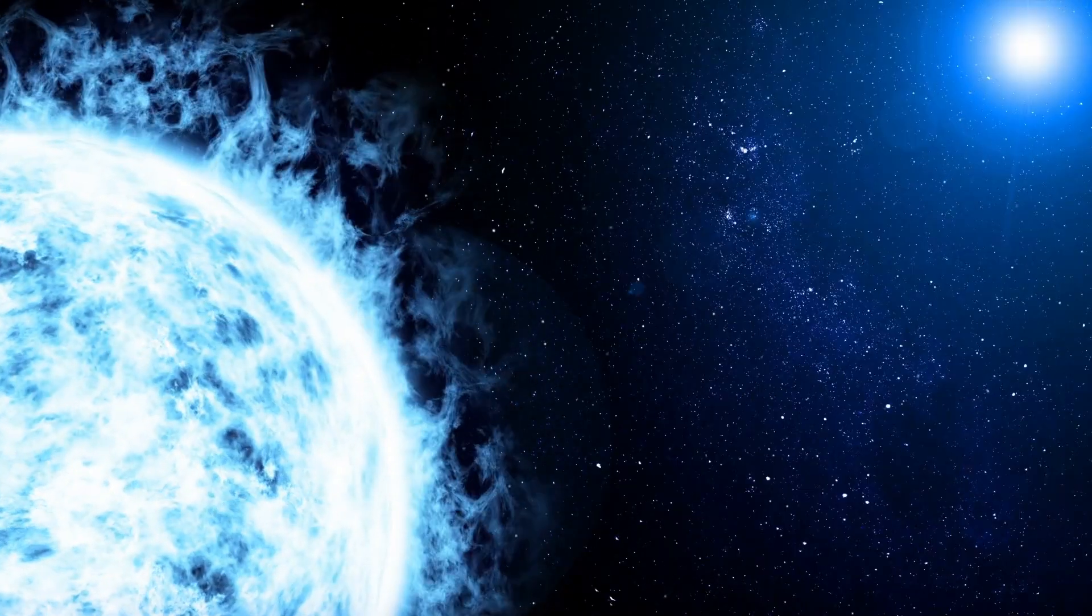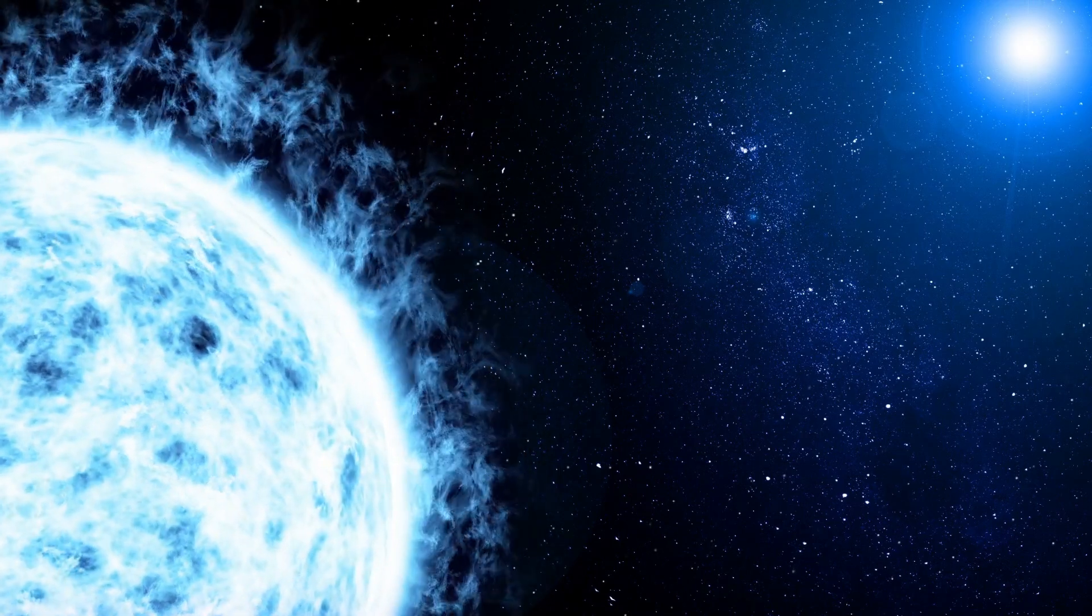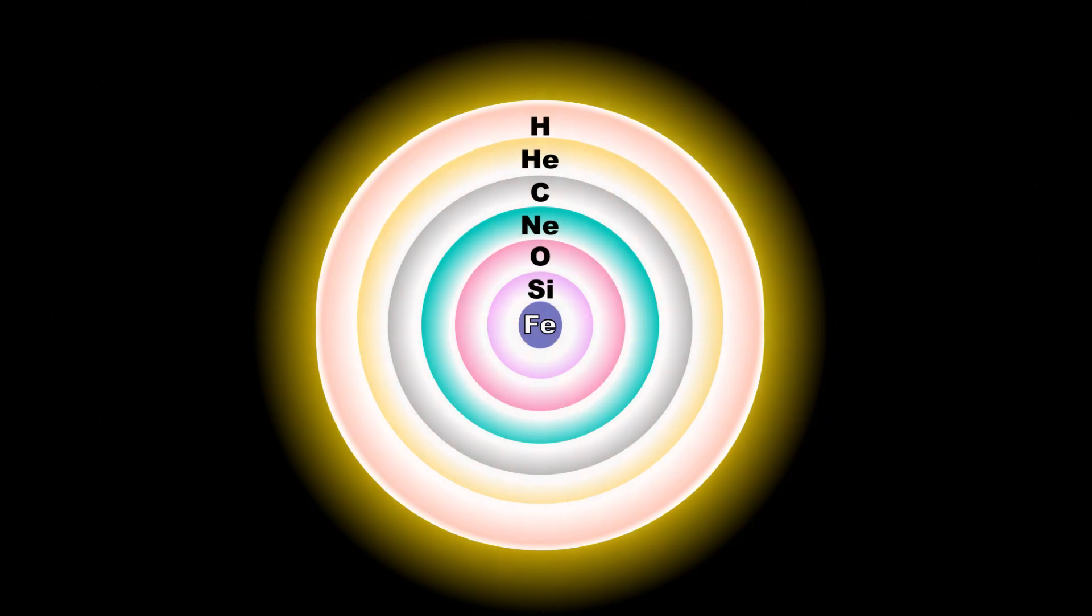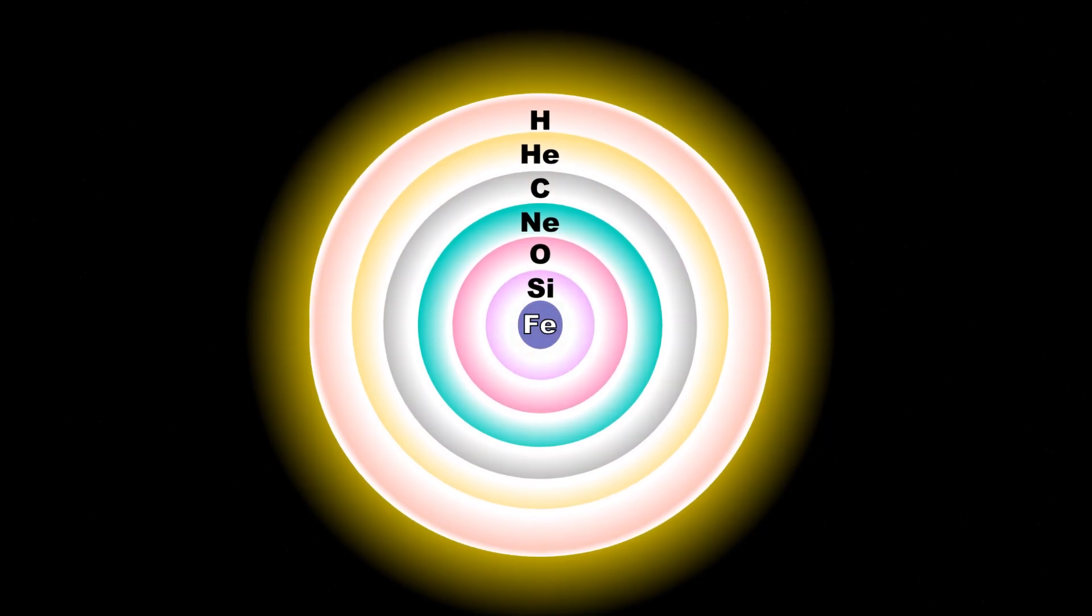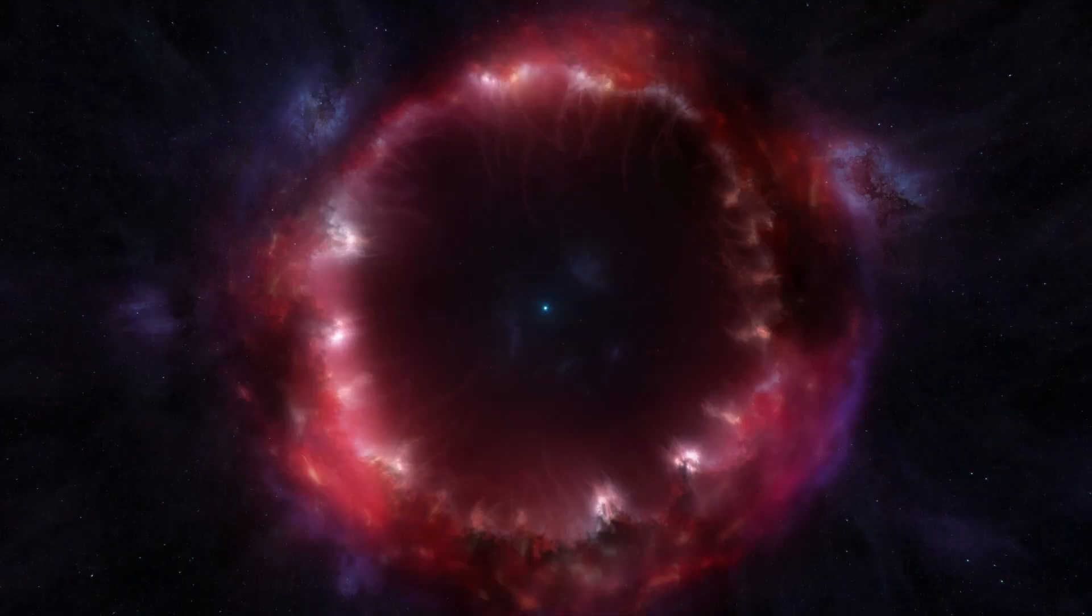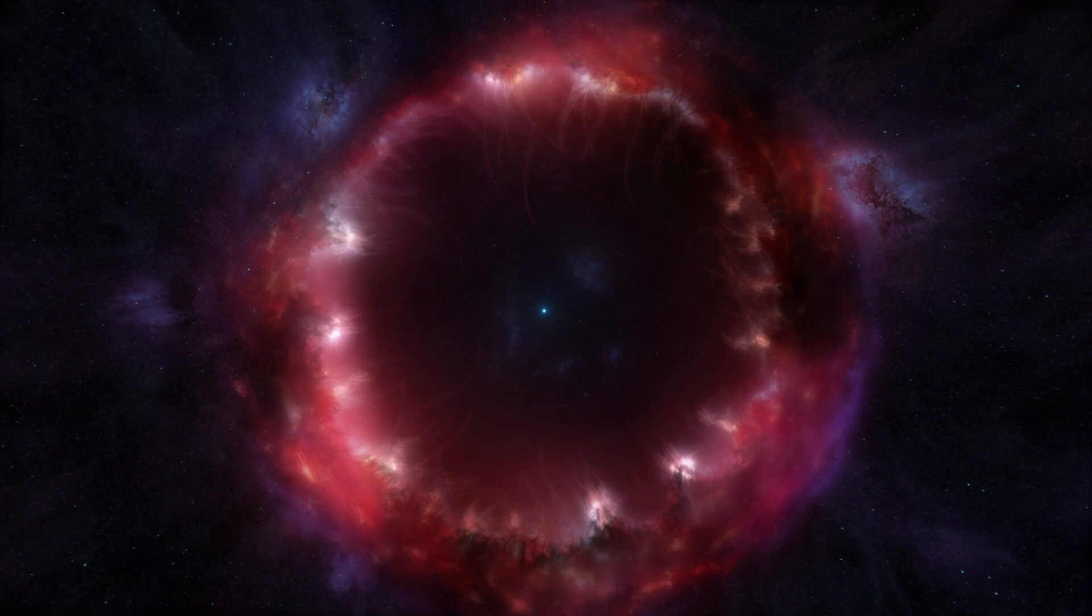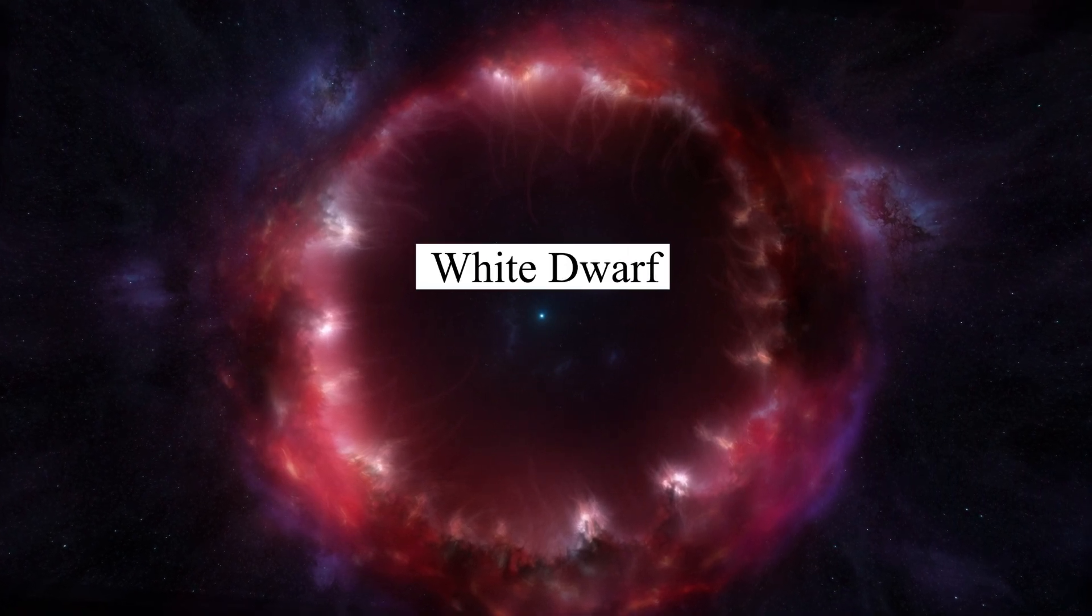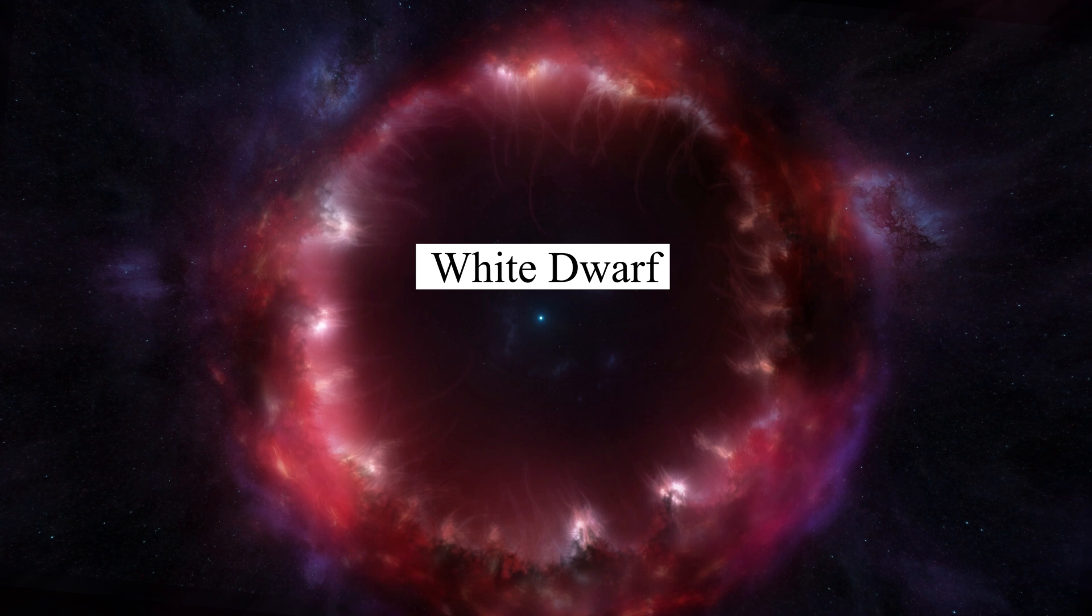Stars with at least half the mass of the sun can also begin to generate energy through the fusion of helium at their core, whereas more massive stars can fuse heavier elements along with a series of concentric shells. Once a star like the sun has exhausted its nuclear fuel, its core collapses into a dense white dwarf, and the outer layers are expelled as a planetary nebula.